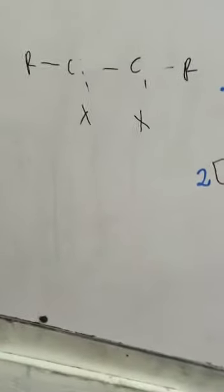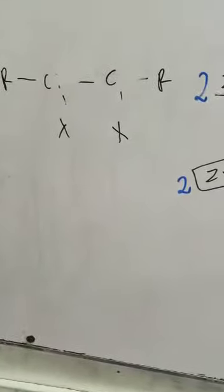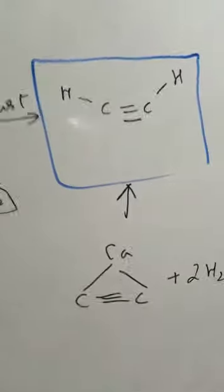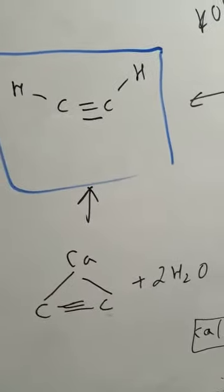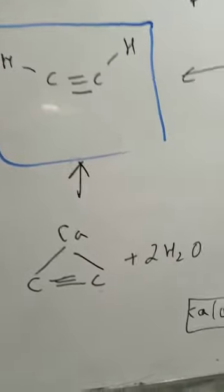Now look at my brother here. Alkyne is a triple bond. This is also unsaturated, but it is more unsaturated.